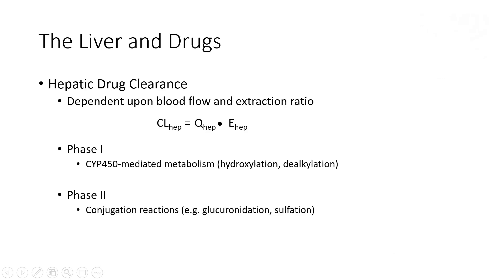When we look at drug clearance by the liver, we have to consider how much blood flow is going to the liver and what is the extraction ratio of that particular drug. So clearance is determined by hepatic blood flow, or Q, times the extraction ratio. There are two main types of metabolism that occur in the liver. Phase I metabolism involves CYP-P450-mediated metabolism, such as hydroxylation or dealkylation reactions. Phase II metabolism involves conjugation reactions such as glucuronidation or sulfation — the addition of a usually polar molecule to the drug to make it more water-soluble. Phase I and Phase II may occur independently or sequentially through the liver.